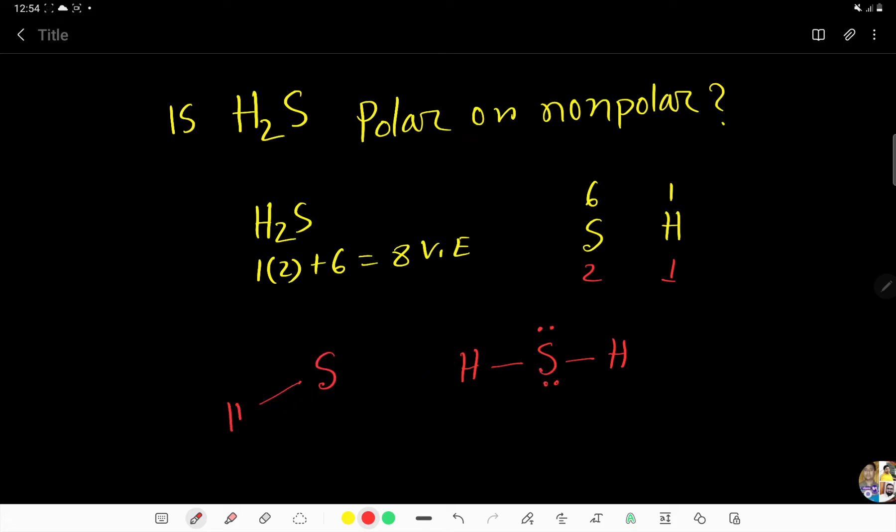I will express this Lewis structure like this. Over sulfur, we have 2 lone pairs. Now, I will determine the hybridization first.